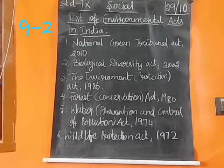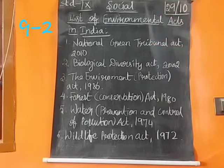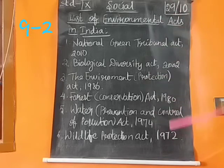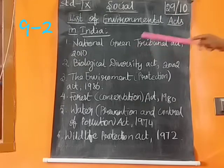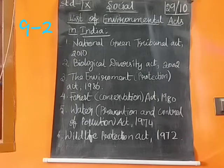Next one is the list of environmental acts in India. This is a tabular column, found on page number 289. The table has two columns: one is the act column and another one is the action column. I don't have the space, that's why I wrote only the act column in points. Students, don't get confused — we are going to study each act one by one.